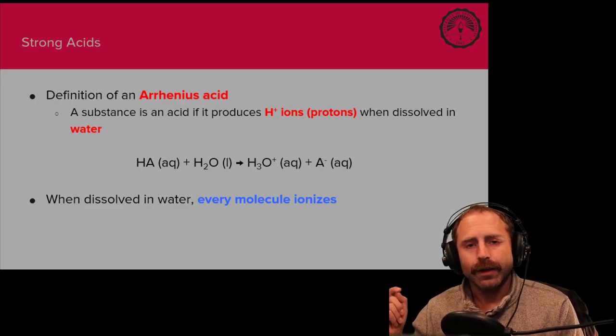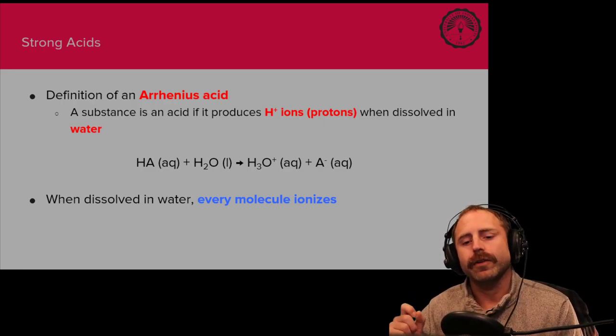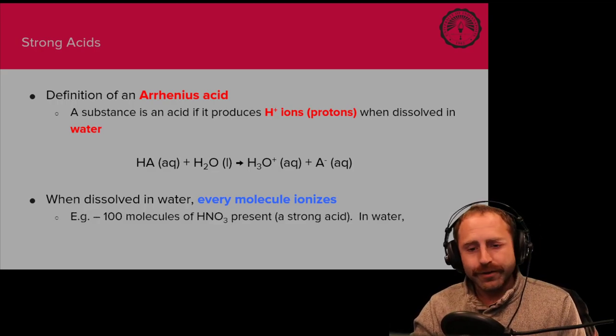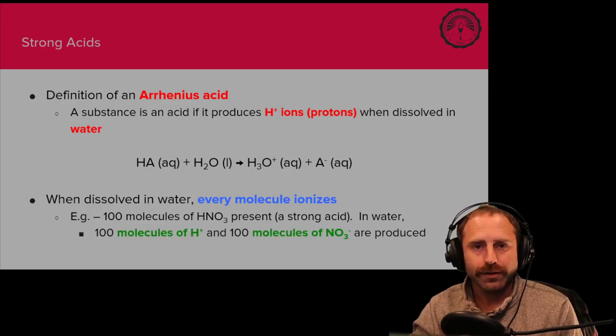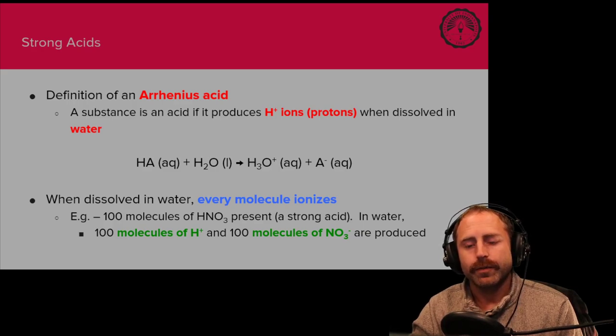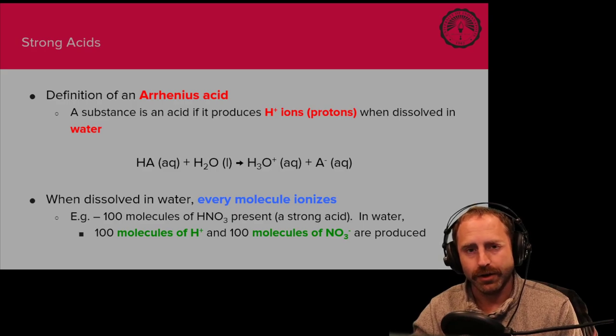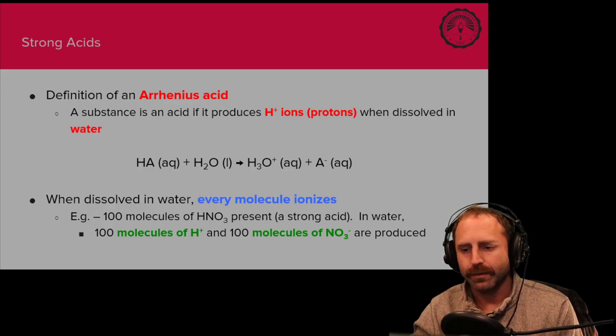This is so important. When you have a strong acid, every single acid molecule will completely ionize. Ionize means it separates into its individual ions. If you have 100 molecules of nitric acid, you're going to have 100 ions of protons, and you're going to have 100 ions of nitrate. Always going to completely disassociate. That's the definition of a strong acid. Completely disassociates. 100% ionizes. I mean the exact same.